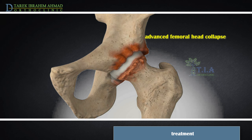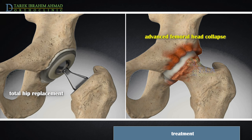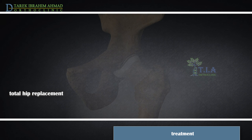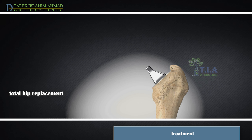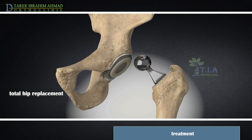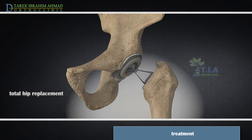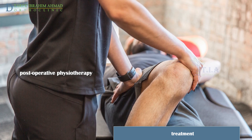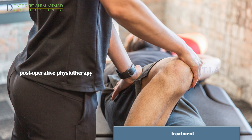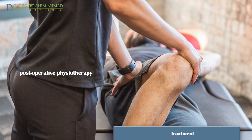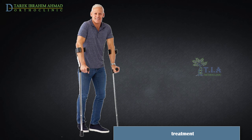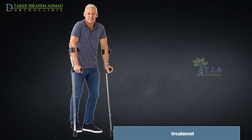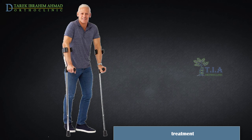If osteonecrosis has advanced to the point where the femoral head has already collapsed, the most successful treatment is total hip replacement. In this procedure, the doctor removes the damaged bone and cartilage, then positions new metal or plastic joint surfaces to restore the function of the hip. Physical therapy after surgery is a key component for recovery — it starts immediately the day after surgery. It takes a few months for the bone to heal, during which time you will need to use a walker or crutches to avoid putting stress on the damaged bone.